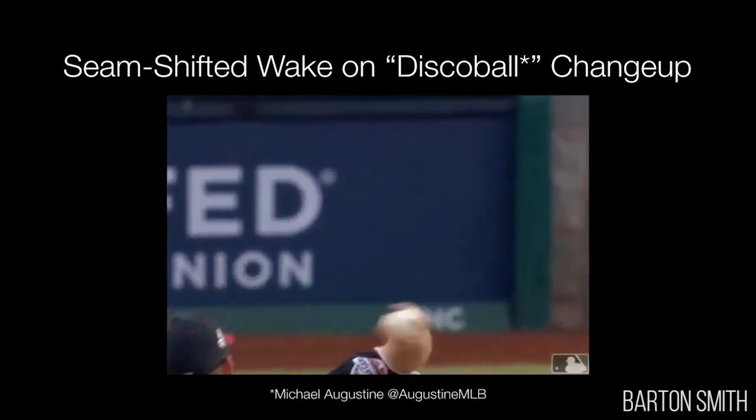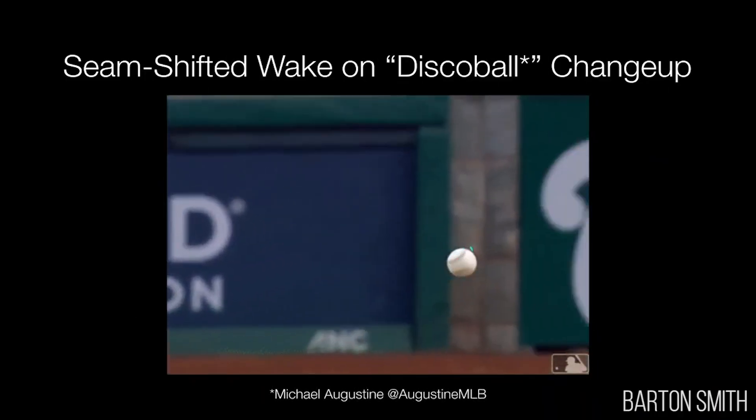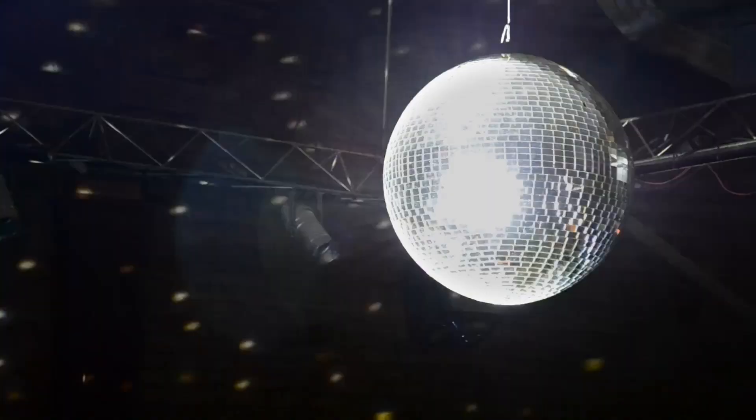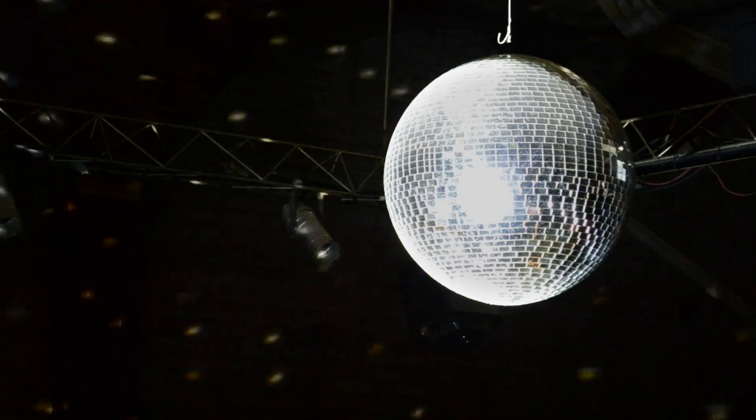This 'disco ball changeup' with the seam shifted wake typically ends up spinning with the axis almost vertically, which allows it to have downward force in addition to the Magnus force to the side. I think it's a coincidence that it ended up that way. The fastball spins on an axis roughly horizontal, but the changeup ends up spinning almost totally vertically — that's why Andrew has named it the disco ball changeup, because it's spinning like it's hanging from the ceiling.